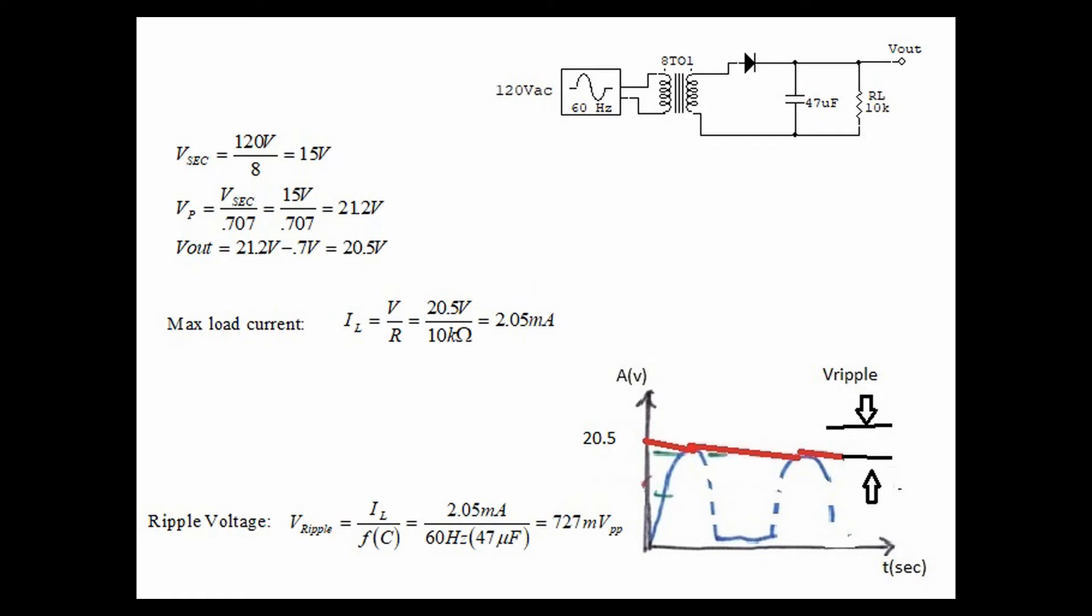The capacitor will charge up to 20.5 volts and it'll slowly discharge. In the process, we have a DC level, more of a straight line with a ripple voltage, which we call V_ripple. The size of the ripple voltage depends on how much current is drawn by the load. For that reason, we calculate the load current. In this case, 20.5 volts divided by 10 kilo ohms equals 2.05 milliamps.